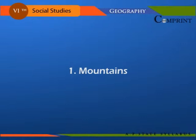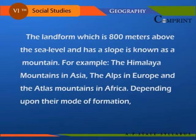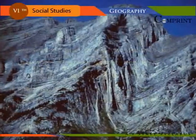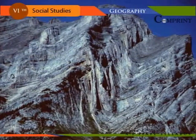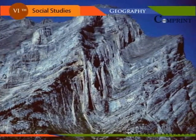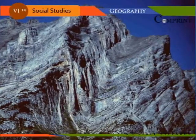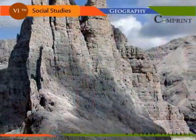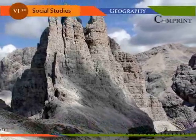Mountains. The landform which is 800 meters above the sea level and has a slope is known as a mountain — for example, the Himalaya Mountains in Asia, the Alps in Europe, and the Atlas Mountains in Africa. Mountains can be classified as fold mountains, block mountains, volcanic mountains, and residual mountains.